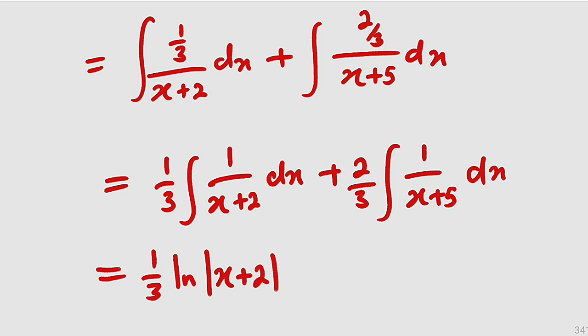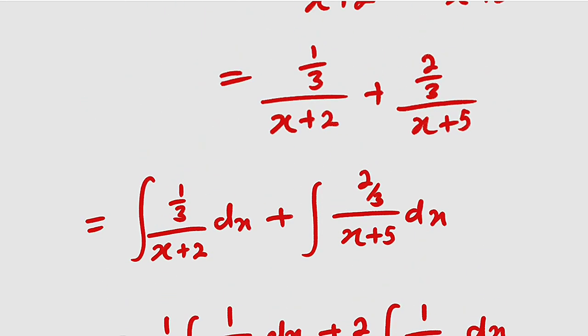Move to the other one, plus 2/3. The same thing, if you differentiate this, you're going to obtain 1. So we have the natural log of the absolute value of x+5, then plus the constant of integration, and we are done. This is the solution to this problem.